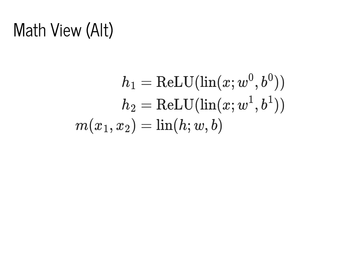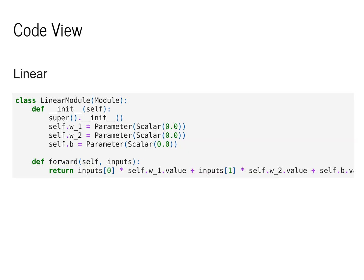Again, the notation is not great, but we're going to see in this section of the class how to make it much simpler. I'll end by showing the code in Minitorch. As a reminder, this was our linear module. It has three parameters: w1, w2, and b, and it has a method forward that computes the linear equation that we've seen so far. This is mathematically equivalent to the lin function.